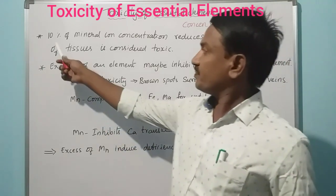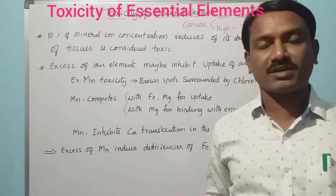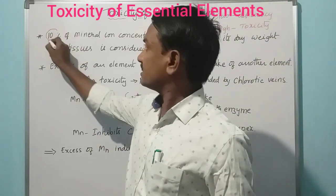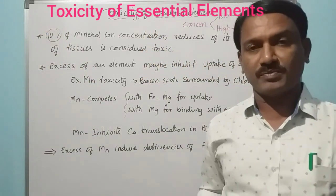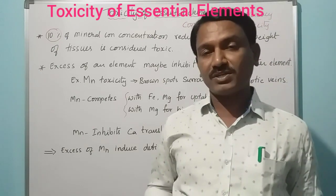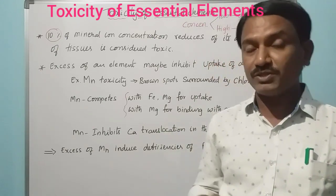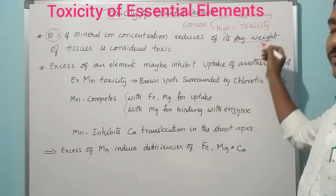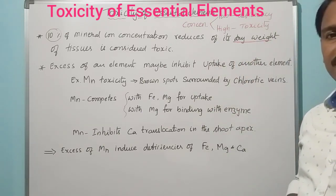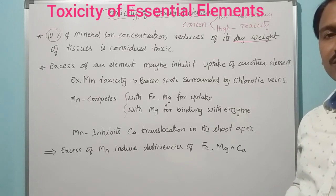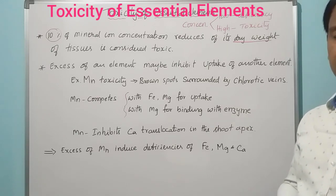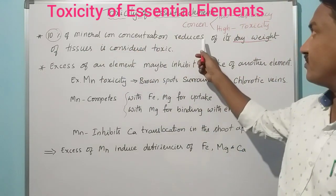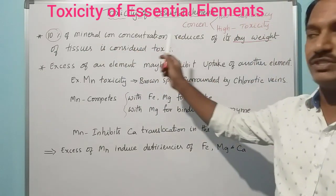How do we identify toxicity? When 10% of mineral ion concentration is reduced compared to the dry weight of tissues, that element is considered toxic to plants. So a 10% reduction in mineral ion concentration relative to dry weight of tissues is the criterion for toxicity.